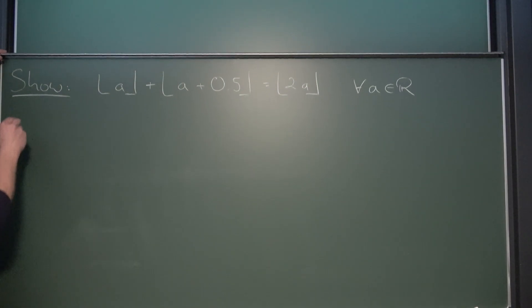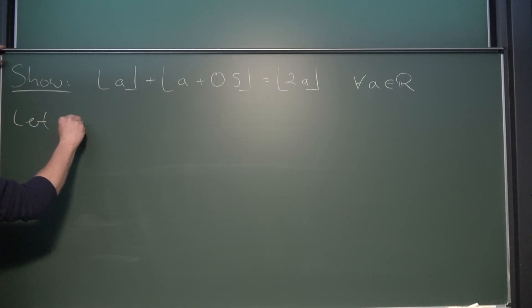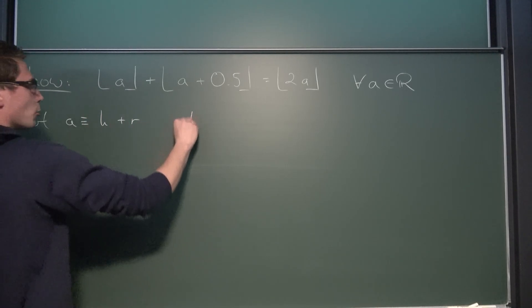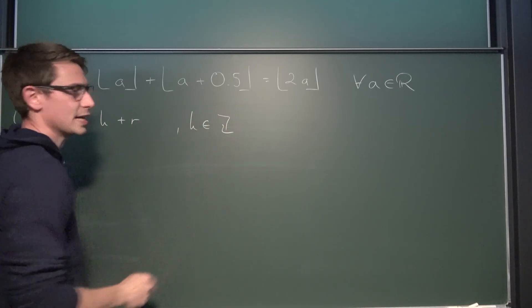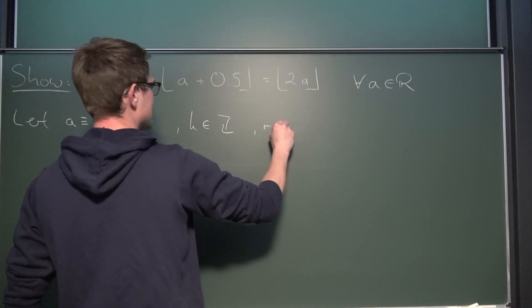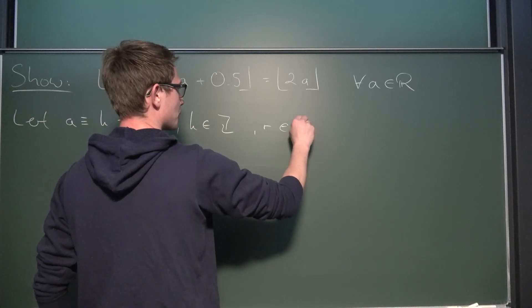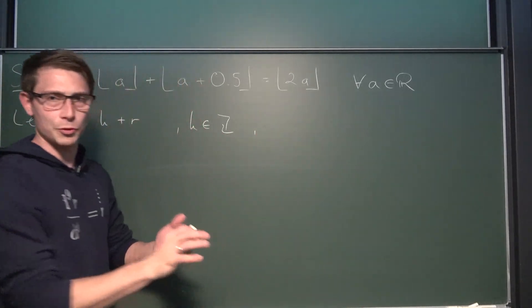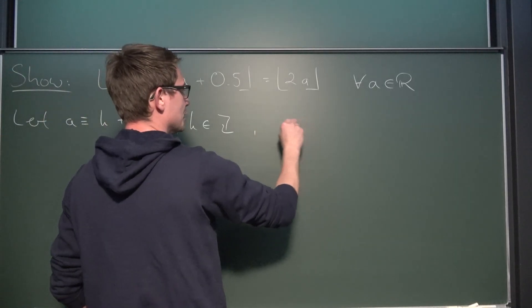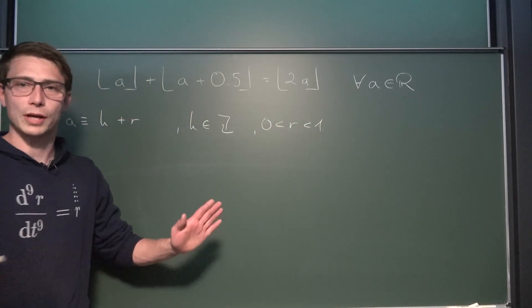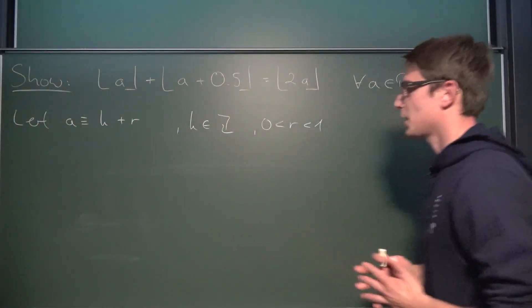So at first, we are going to redefine A. Let A be defined as k plus r, where k is element of the integers. This also covers the negative real numbers. And we have r being strictly greater than 0, but strictly less than 1. Okay, this makes it a bit easier to define everything.